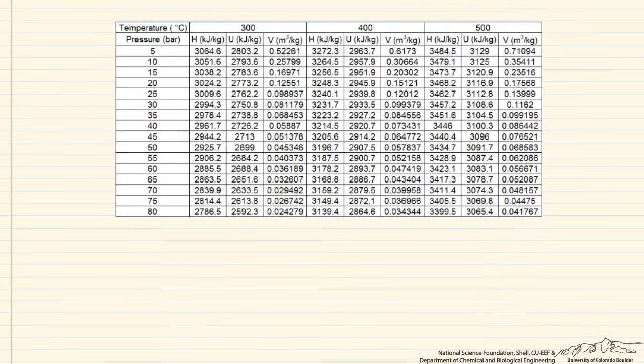So let's use this to find another value. Let's say that we have a pressure that's equal to 60 bar, and our temperature is equal to 500 degrees. Now we're looking at this particular part of the table.